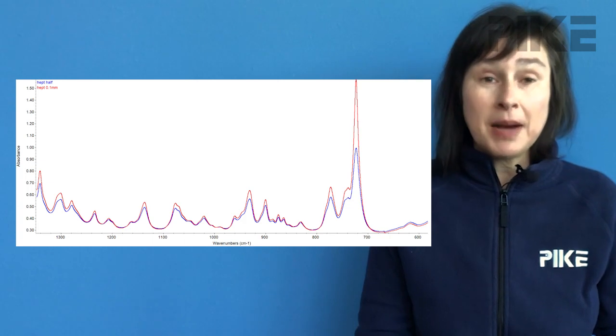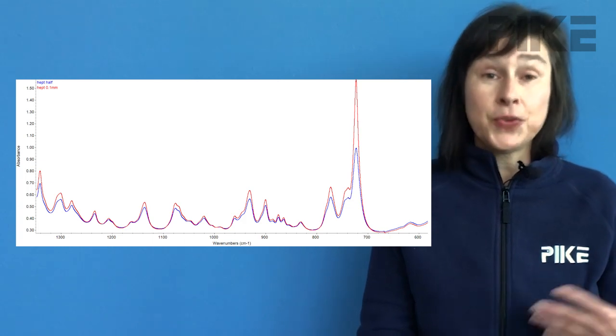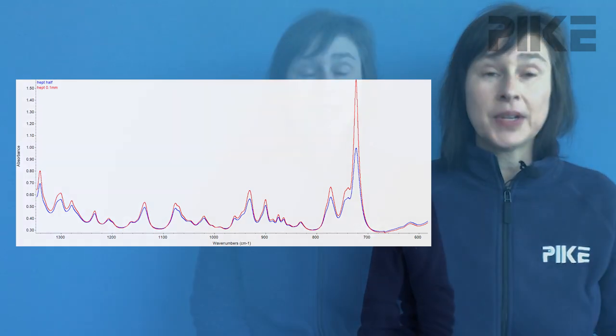This is going to cause a big problem if you're doing quantitative work. So your tip this week: if some of your liquid drips out of the filling port when you remove the syringe, go ahead and take your cell, hold it up, and make sure the liquid level is completely full. Thanks for watching this week — we'll see you next time.